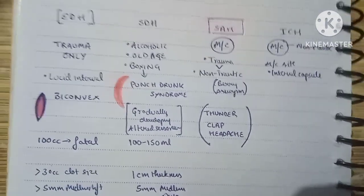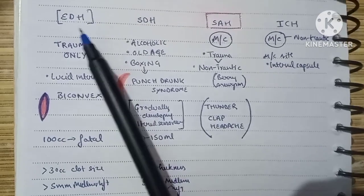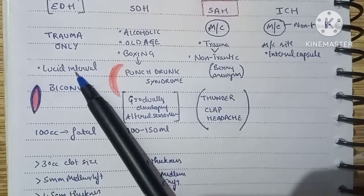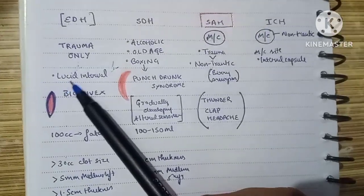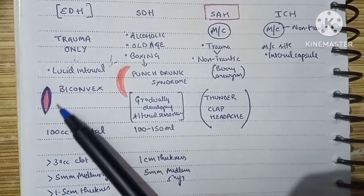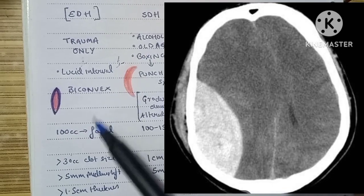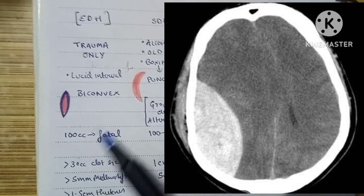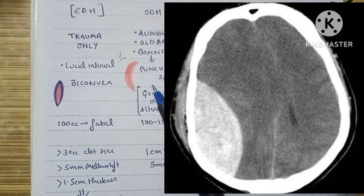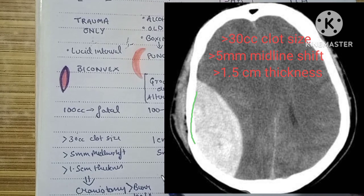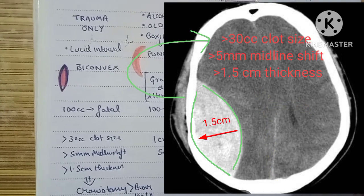Extradural hemorrhage is exclusively traumatic, meaning it occurs by trauma only, and it is characterized by a lucid interval — a period of consciousness between periods of unconsciousness. On CT, we see a biconvex hematoma. A volume of 100 cc of this biconvex hematoma is fatal. The indications for surgery are more than 30 cc of clot size, more than 5 mm of midline shift, and more than 1.5 cm thickness of the hematoma.